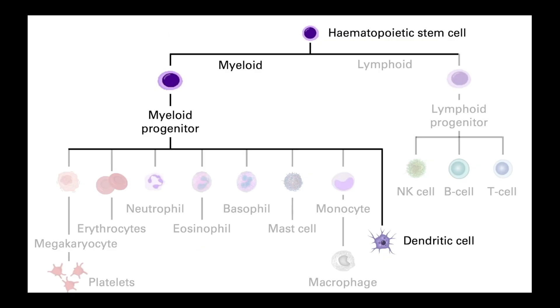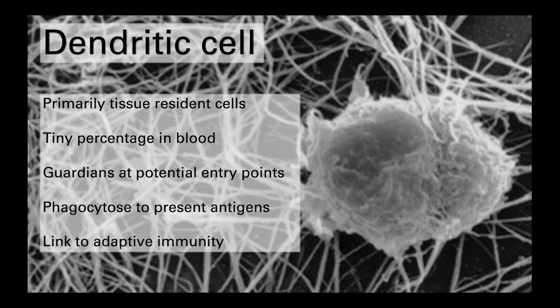The last of the myeloid-derived innate cells are the dendritic cells. Dendritic cells are also found throughout the tissues of our bodies, but only a tiny population circulates in the blood. They are prominent at the sites of potential entry points for microbial invasion, where they specialise in antigen uptake and presentation, providing a link between the innate and adaptive immune systems. After phagocytosing a threat, they migrate through the lymphatic system to the lymph nodes, where they interact with T lymphocytes and help initiate the highly specialised adaptive immune response.